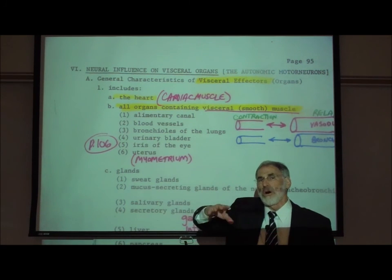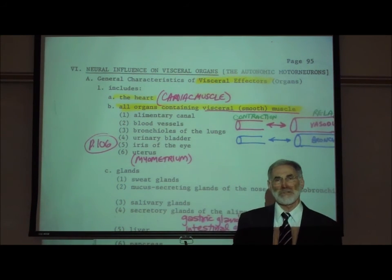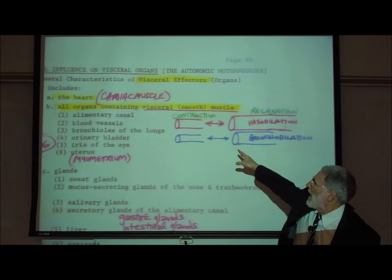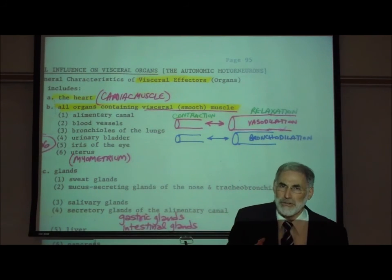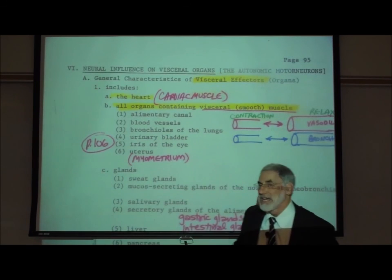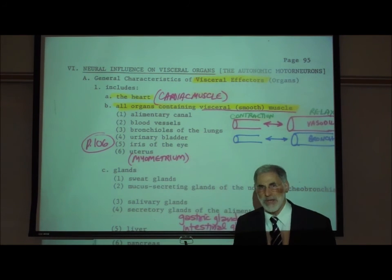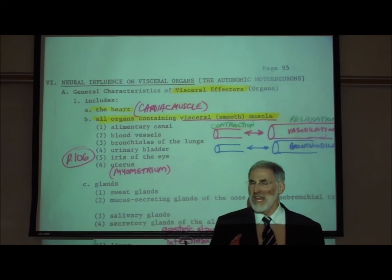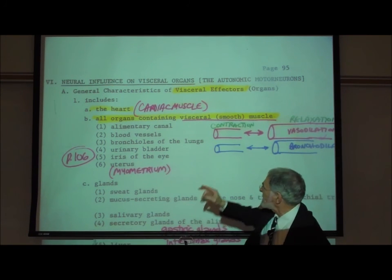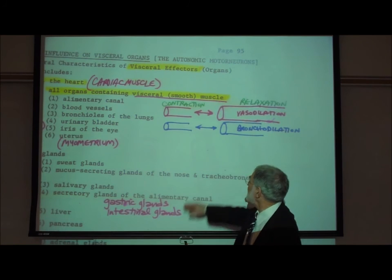In the walls of blood vessels is visceral smooth muscle innervated by autonomic motor neurons. Autonomic motor neurons can cause the visceral smooth muscle in the walls of blood vessels to contract, causing vasoconstriction, or they can cause the visceral smooth muscle to relax, leading to vasodilation. There is also visceral smooth muscle in the walls of our airways, like the bronchioles. If the visceral smooth muscle in the walls of the bronchioles contracts, that leads to bronchoconstriction, and if it relaxes, that leads to bronchodilation.